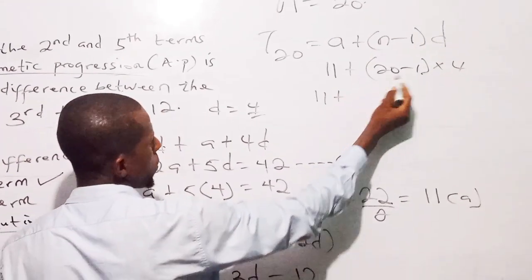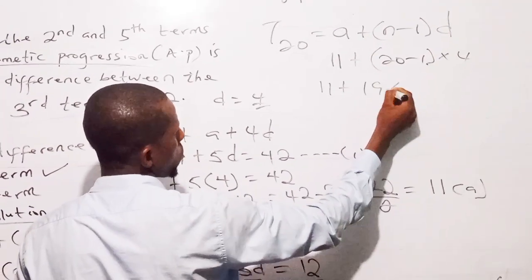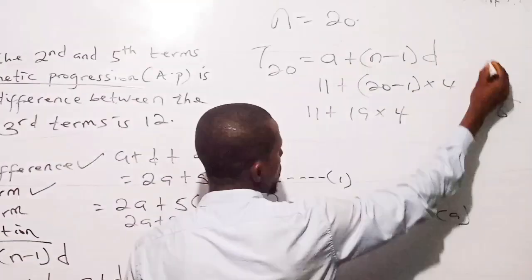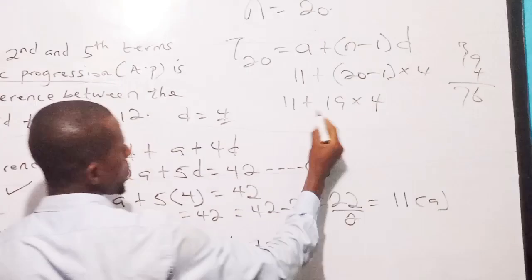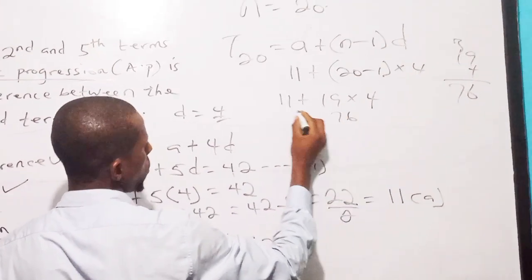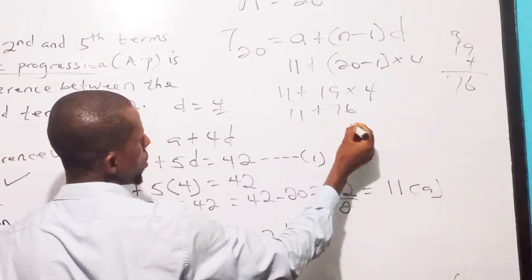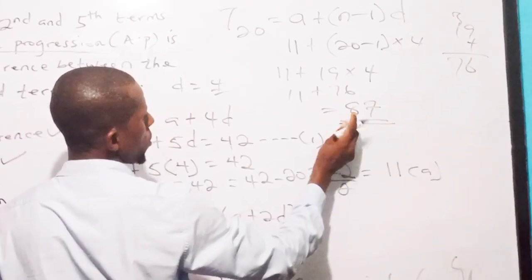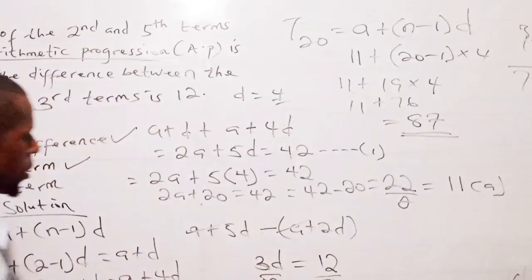So we have 11 plus, 28 minus 1 is 27. So 27 times 4. So that should give us, when we multiply this, that should give us 108. So 108 plus 11, we should have 119. These are our final answers. So thank you very much.